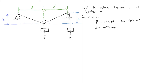In this problem, we're trying to find the value of h which makes this system in equilibrium. What we're really doing is trying to find this angle theta, so that we could use this right triangle to find this value of h. We're given the value of d, which is 600 millimeters.